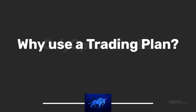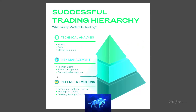This is one of the most critical pieces of a trader's success. I want to talk about this graphic — what you could consider the successful trading hierarchy. Starting from the top of the pyramid, the least important part of trading is entries, exits, and market selection — meaning actually making your entry, making your exit, and determining what stock you're going to trade. There are plenty of trade ideas available in any single day across so many different markets.